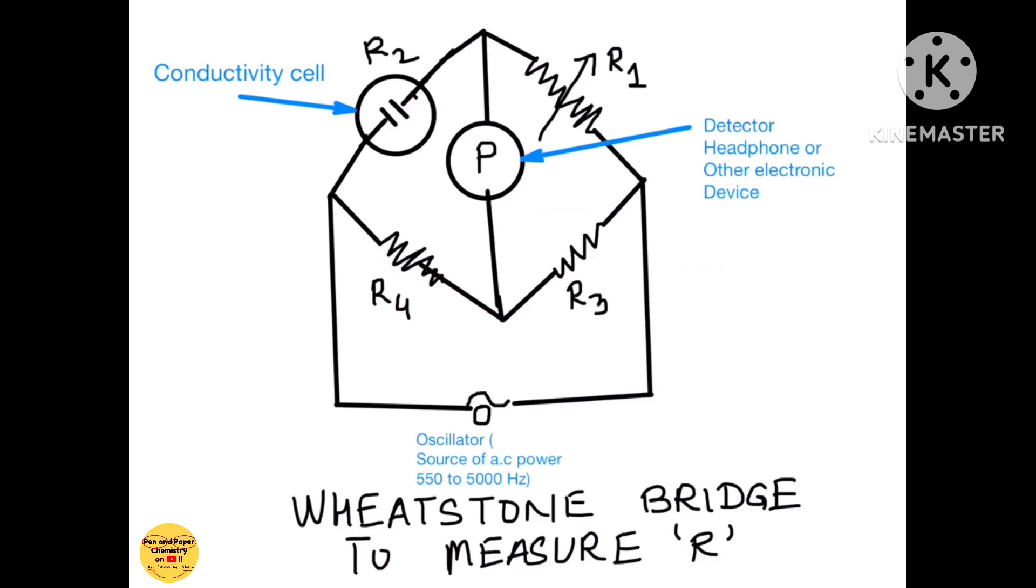Now this is the setup of a Wheatstone bridge. I am sure you must have done this in physics as well. How a Wheatstone bridge is used to determine the resistance of an unknown device. Here I have used a conductivity cell.